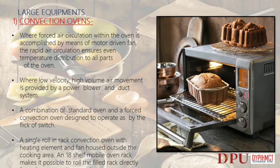Large Equipment. Convection ovens: forced air circulation within the oven is accomplished by means of a motor-driven fan; the rapid air circulation ensures even temperature distribution to all parts of the oven. A combination of standard oven and forced convection oven is designed to operate by the flick of a switch. A single roll-and-rack convection oven has heating elements and fan housed outside the cooking area. An 18-shelf mobile oven rack makes it possible to roll the filled rack directly from the preparation area into the oven.